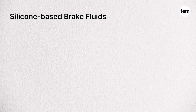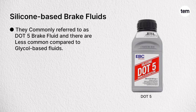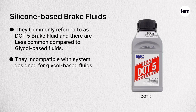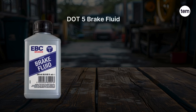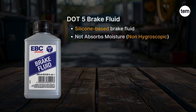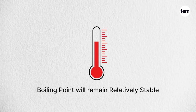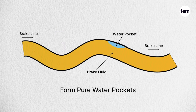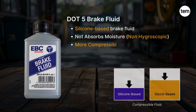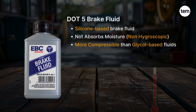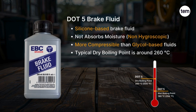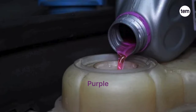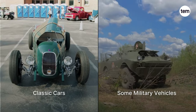Next, let's understand silicone-based brake fluids, commonly referred to as DOT 5. They are less common compared to glycol-based fluids and are incompatible with systems designed for glycol-based fluids. DOT 5 brake fluid does not absorb moisture over time, meaning the boiling point remains relatively stable. However, any water that gets into the braking system will tend to form pure water pockets, which could cause brake corrosion. This fluid is more compressible than glycol-based fluids. It has a typical dry boiling point of 260 degrees Celsius and a wet boiling point of 180 degrees Celsius. It has a purple appearance and is typically used in classic cars and some military vehicles.